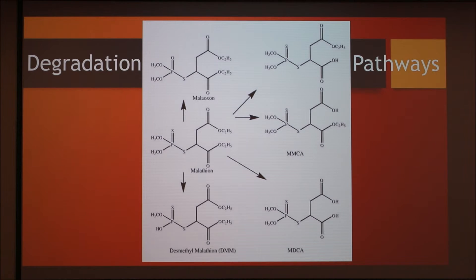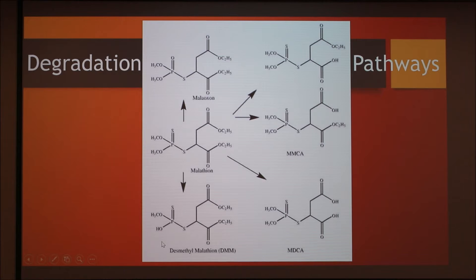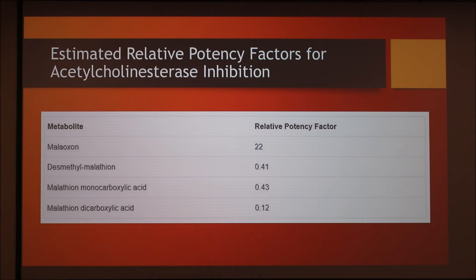Malathion can also be biodegraded in the body to different products. Detoxifying enzymes, such as carboxyl esterases, degrade malathion into mono and diacid metabolites. You can see here your malathion monocarboxylic acids and malathion dicarboxylic acids. It can also undergo oxidative demethylation, where you have a methyl group leaving. The forms of malathion that these degradation methods produce are much less toxic than malaoxon. In this table, you can see the different metabolites we discussed — malaoxon, desmethyl malathion, malathion monocarboxylic acid, and malathion dicarboxylic acid — with their relative potency factors for acetylcholinesterase inhibition. As you can see, the potency factor for malaoxon is much more toxic than the other forms.